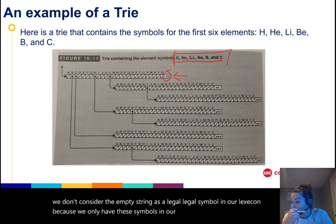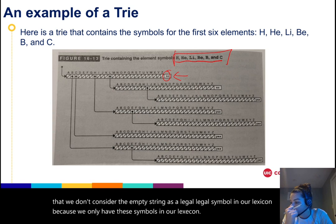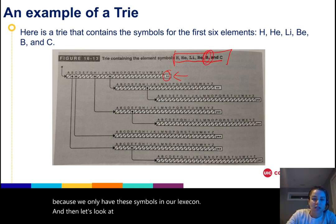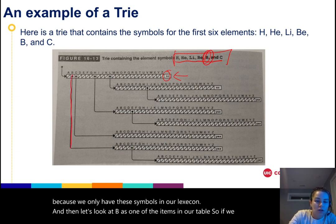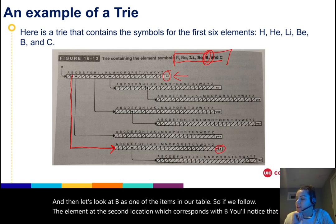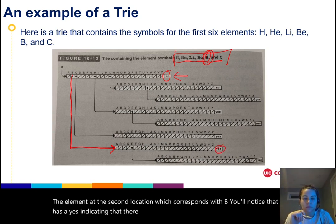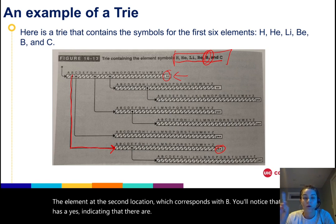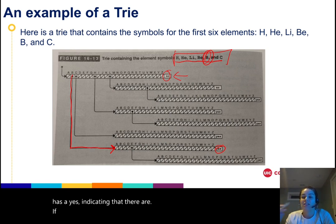Let's look at B as one of the items in our table. If we follow the element at the second location, which corresponds with B, you'll notice that it has a 'yes' indicating that if you've gotten there, then that is a valid symbol in the lexicon.